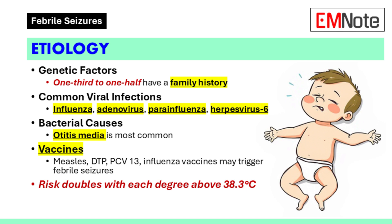Certain vaccines, such as those containing measles, combined diphtheria tetanus toxoids pertussis, pneumococcal conjugate vaccine 13, and influenza vaccines, may be followed by febrile seizures. The height of the fever is a main influencing factor; the risk of having a febrile seizure nearly doubles with each increase in degrees Fahrenheit above 101 degrees Fahrenheit.